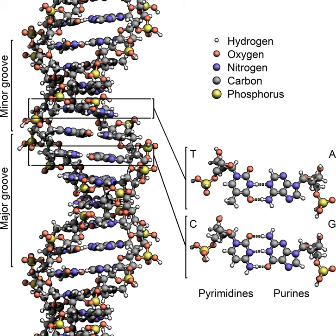One of these three conformations, the B form, is the most common under the conditions found in cells. The two alternative double helical forms of DNA differ in geometry and dimensions. The A form is a wider right-handed spiral with a shallow and wide minor groove and a narrower and deeper major groove. The A form occurs under non-physiological conditions in dehydrated samples of DNA, while in the cell it may be produced in hybrid pairings of DNA and RNA strands. Segments of DNA where the bases have been methylated may undergo a larger change in conformation and adopt the Z form. Here, the strands turn about the helical axis in a left-handed spiral, a mirror image of the more common B form.